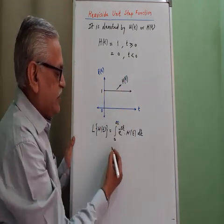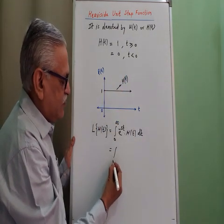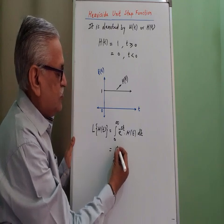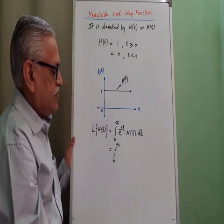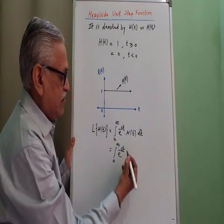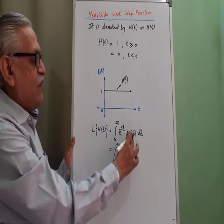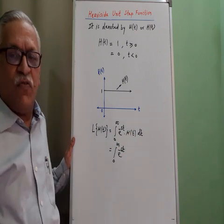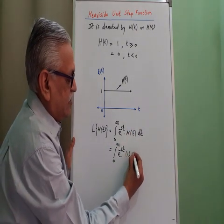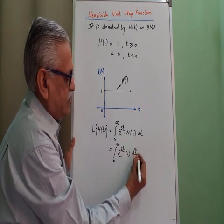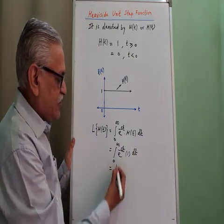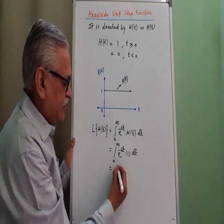we split this integral as the integral from 0 to infinity of e raised to minus s t, and the value for the function is 1, and we perform its integration with respect to t.